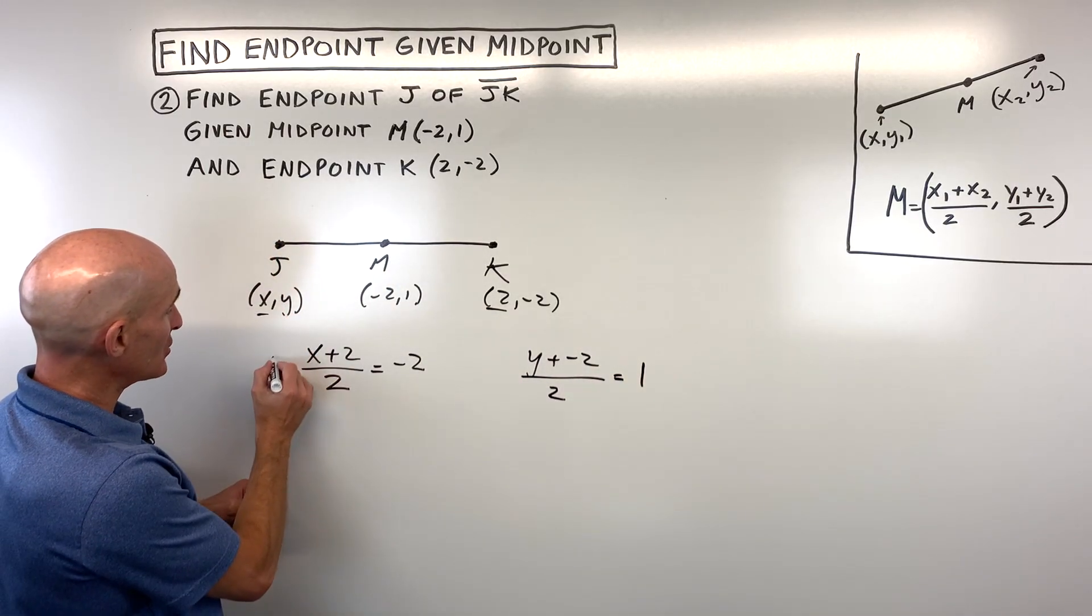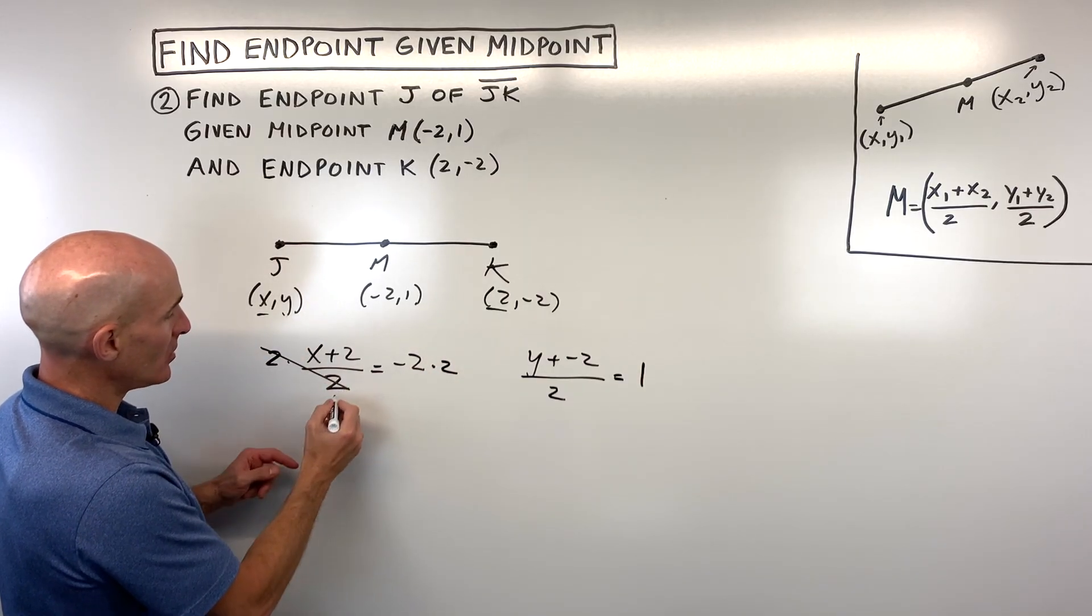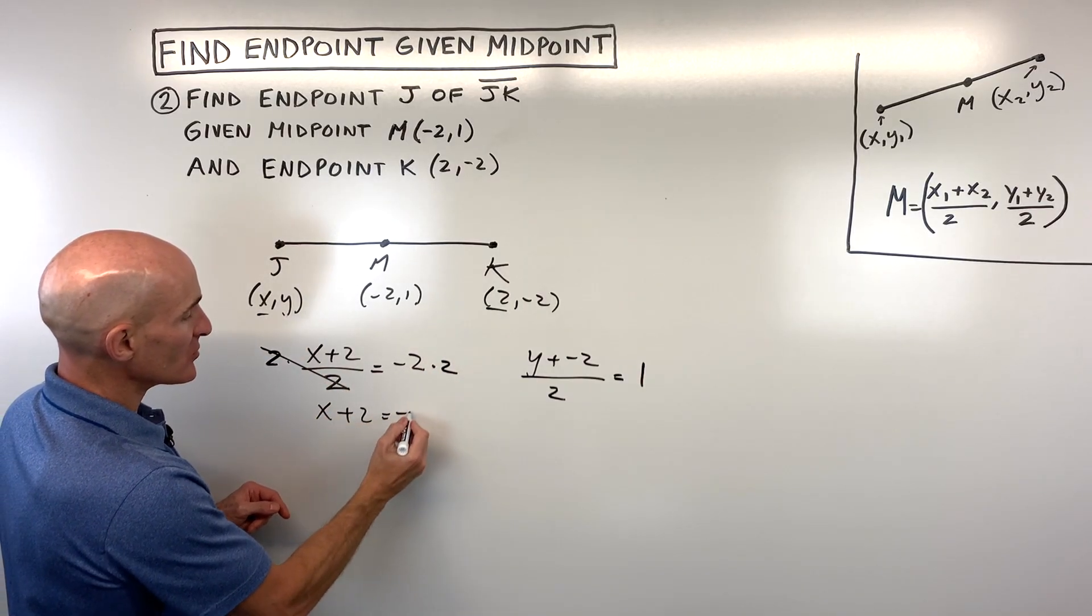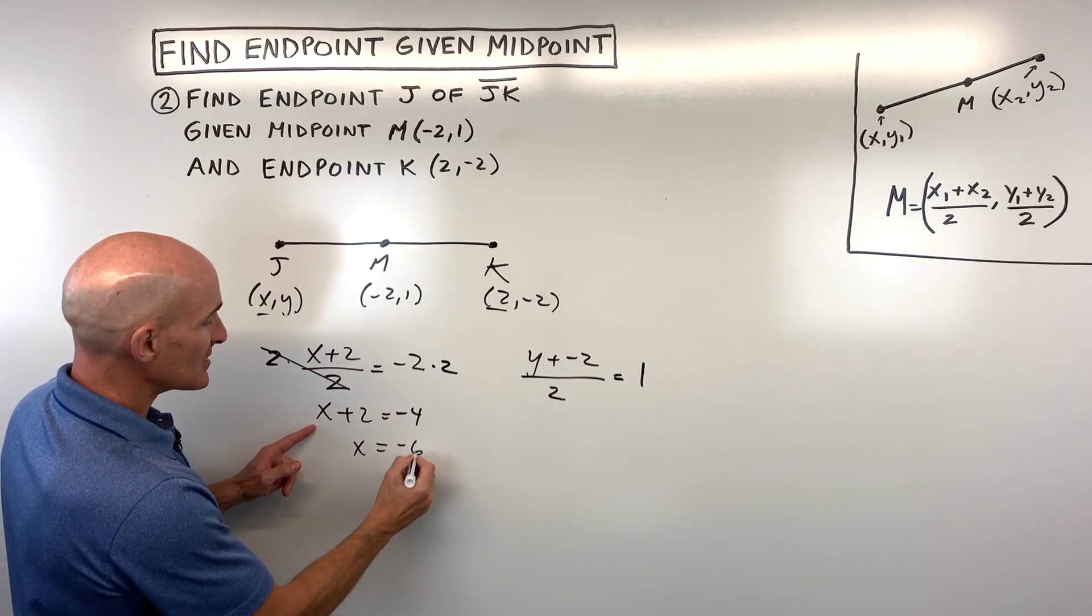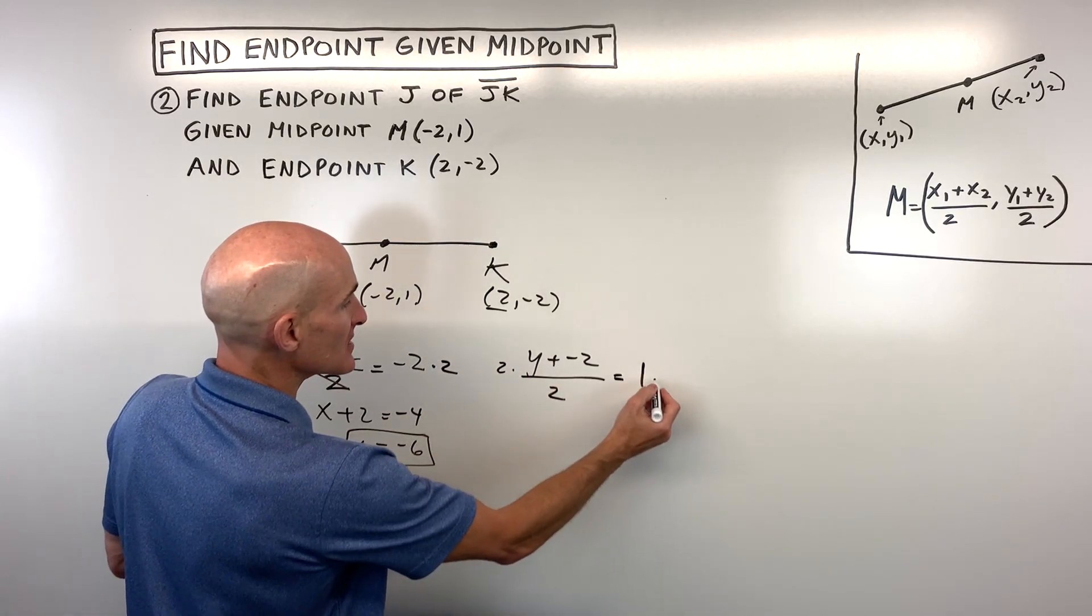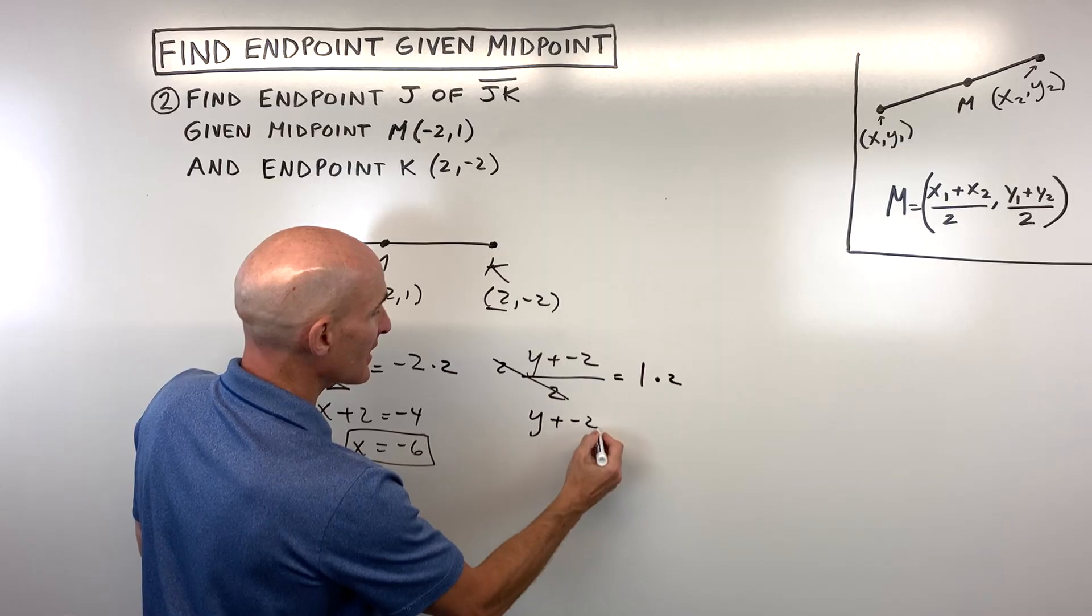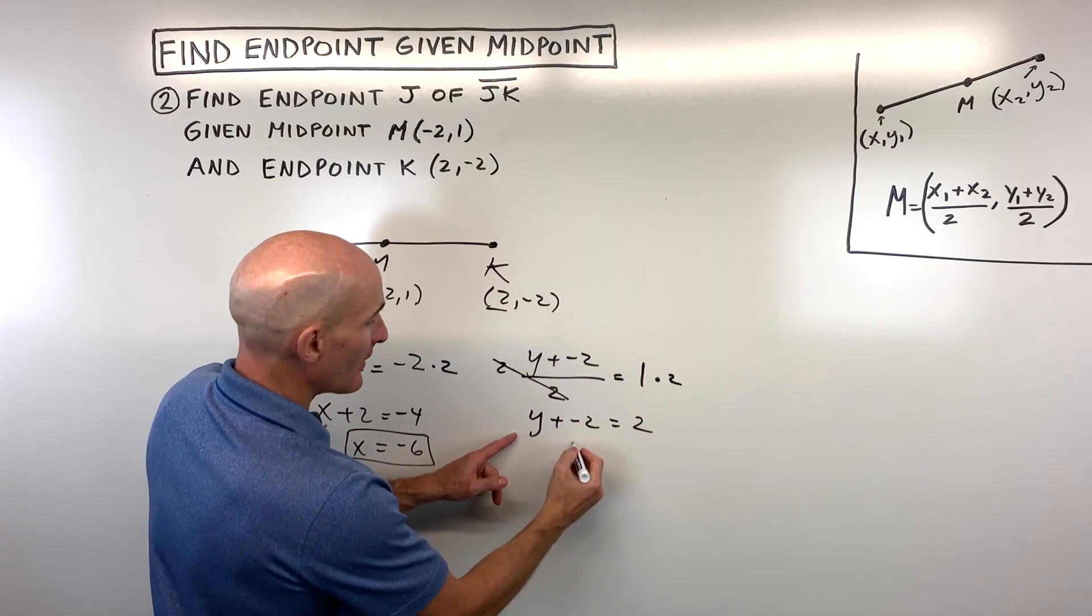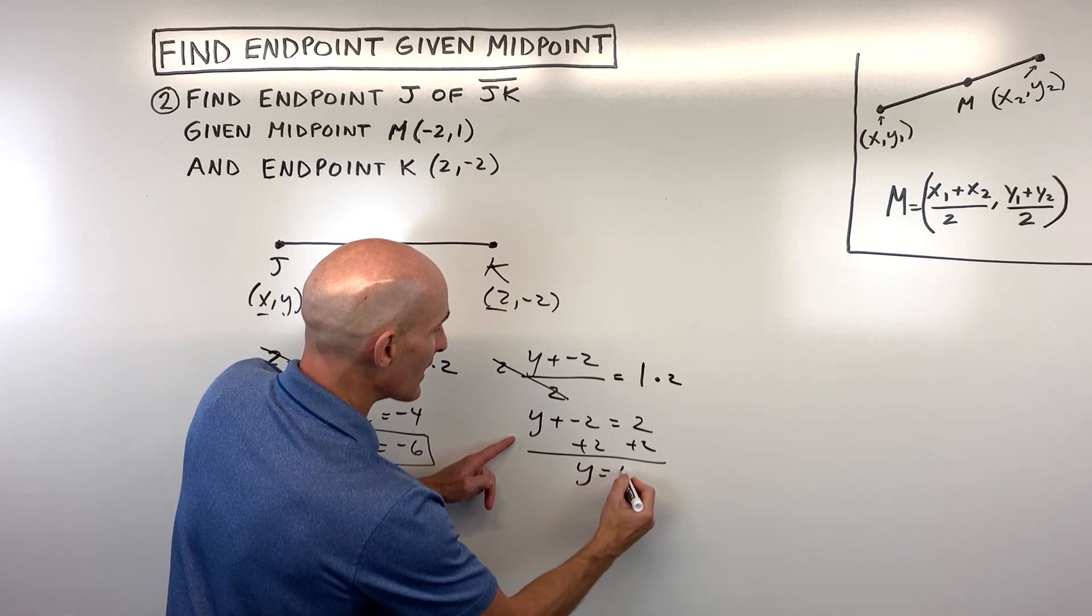Now all we have to do is solve. So instead of dividing by two, I'm going to multiply both sides by two. That way these cancel. We've got X plus two equals negative four. If I subtract two from both sides, we get X equals negative six. And over here, if I multiply both sides by two, the twos cancel, we get Y plus negative two equals two. And if I add two to both sides, you can see that Y is coming out to four.